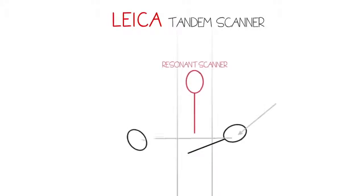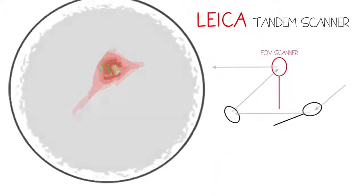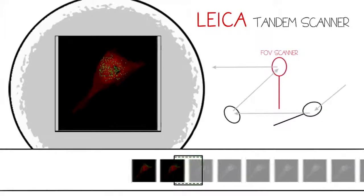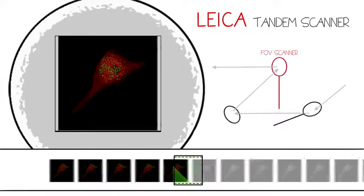Leica's Tandem Scanner eliminates the need for compromise by providing two scanners in one system. This allows you to optimize acquisition parameters based on your experimental needs. The Leica TCS SP8 combines the FOV scanner for the widest field of view and image format with the second high-speed resonance scanner.